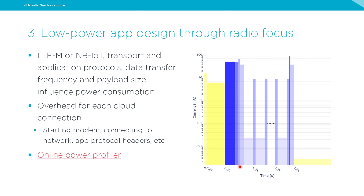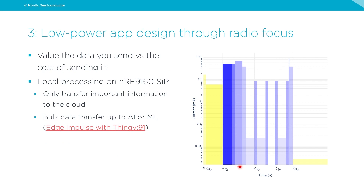There are some ways to solve this. The key point is that you have to really value the data you send versus the cost of sending it. By cost, we're talking about the overhead — the charge, the power consumption, the battery drainage. It could also mean the monetary cost of sending data, but for now let's focus on power consumption.